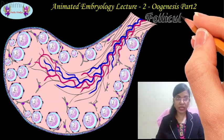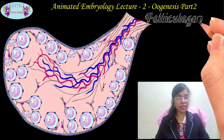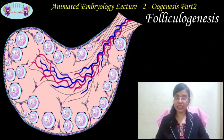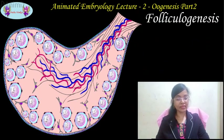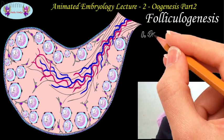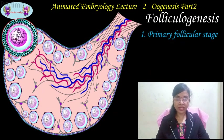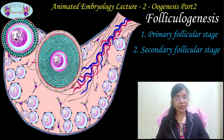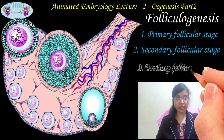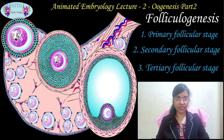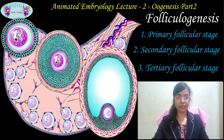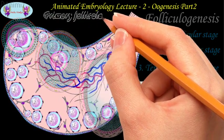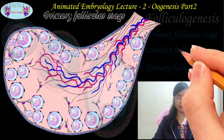For maturation, these primordial follicles must pass through three stages. They are the primary follicular stage, secondary follicular stage, and the tertiary follicular stage. Let's see about the primary follicular stage first.